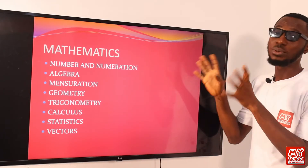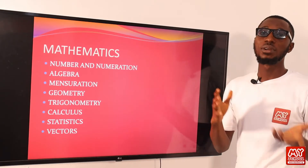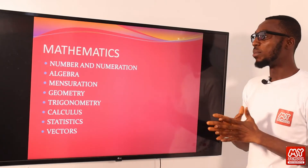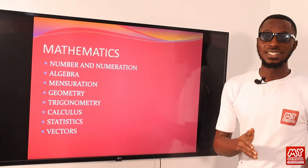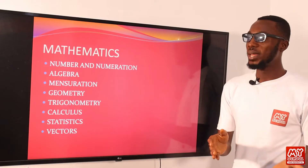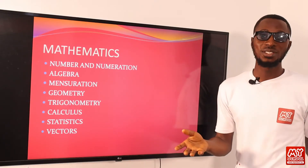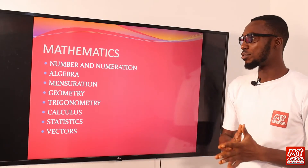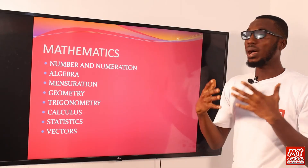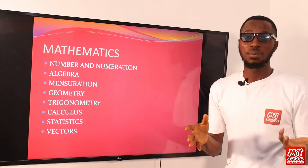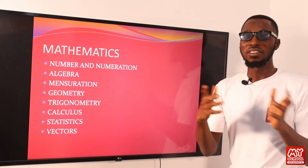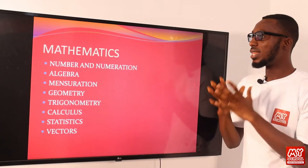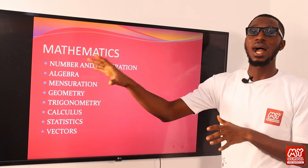Under the unit of number enumeration, we'll be looking at various topics like indices and laws of indices, your logarithm and laws of logarithm. We'll be considering surds — rationalizing the denominator, converting from surd to basic form. We'll also be looking at sets, the Venn diagram, how to interpret the diagram, how to draw up a diagram from a given question. Then we'll be looking into logical reasoning — your truth table, conditional statements, converse statements, inverse statements, and modular arithmetic.